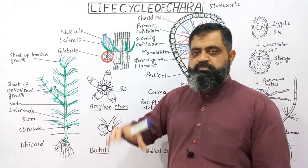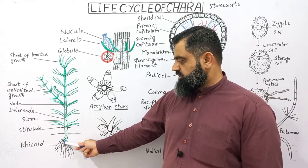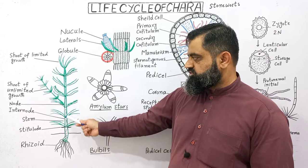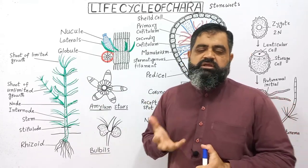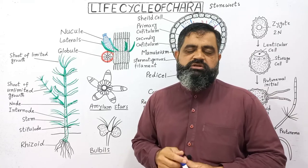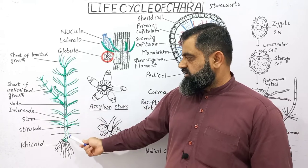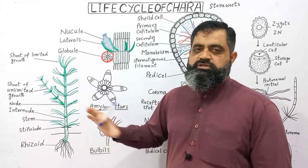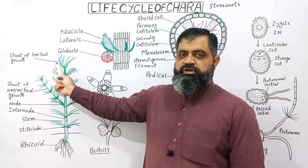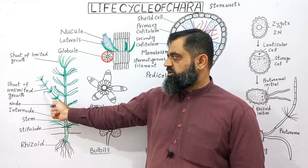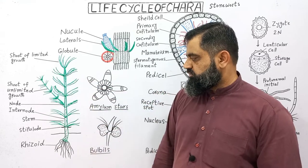There are rhizoids which penetrate into the mud of the water, and from the rhizoids there arises a stem-like structure which grows upright. The plant body is thalloid because it does not contain true stem, root, and leaves, though it does have a stem-like structure and leaf-like structure. This plant has two types of branches: branches of limited growth and branches of unlimited growth. There are also some nodes and internodes present on this plant.